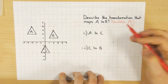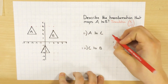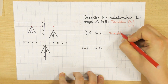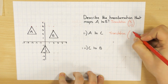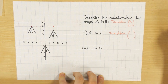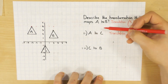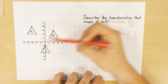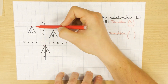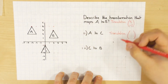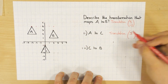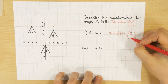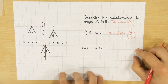Now let's describe A to C. Again, one mark for saying it's a translation. For the column vector, I choose the top of the triangle on A and the corresponding point on C: 1, 2, 3 across to the right — so positive 3. Then counting down: 1, 2, 3, 4, 5 down — so minus 5. The column vector is 3, minus 5.